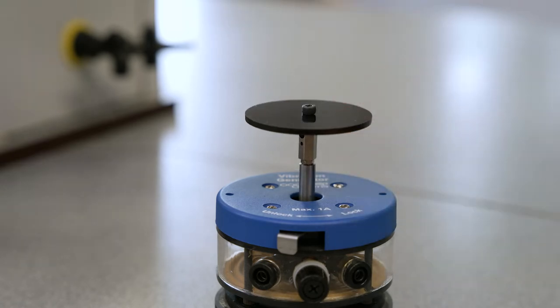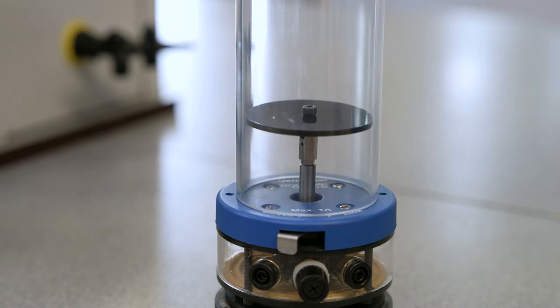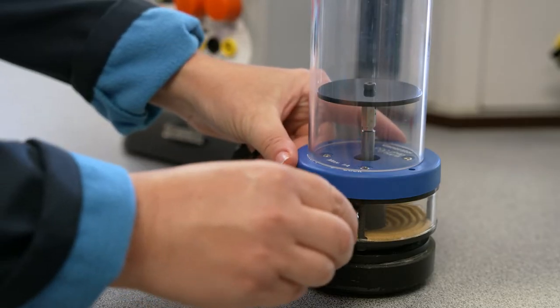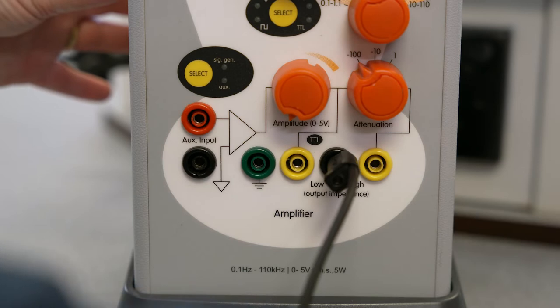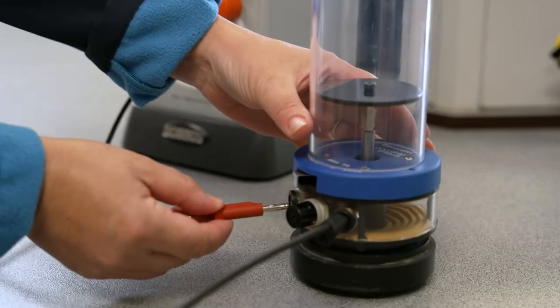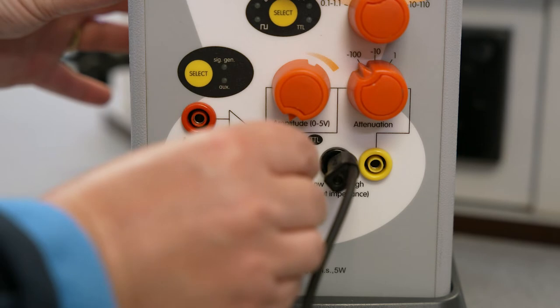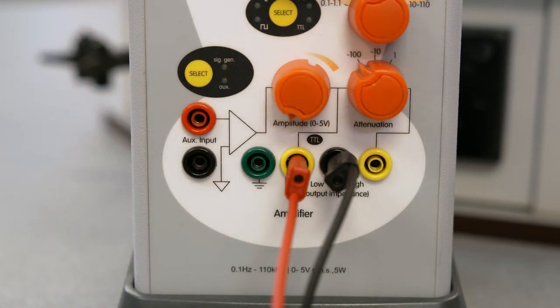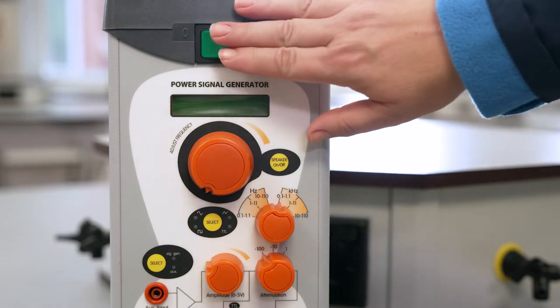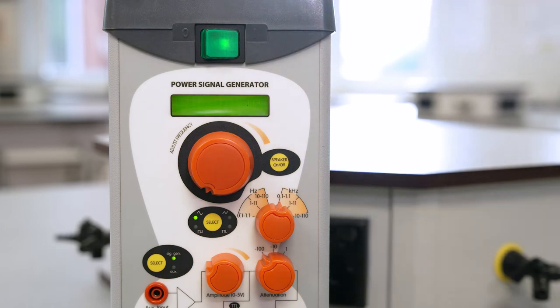Connect the vibration generator to the power signal generator using standard four millimeter leads from the vibration generator to the low impedance sockets on the power signal generator. Turn on the power signal generator allowing a few seconds for it to power up.